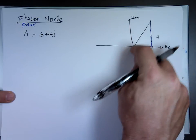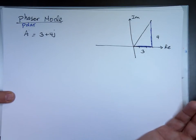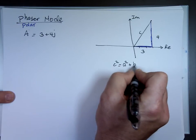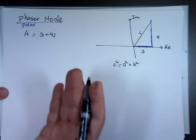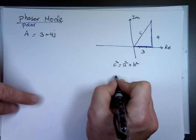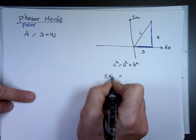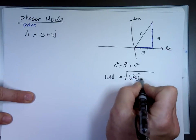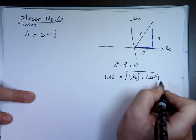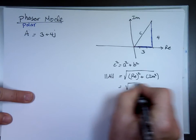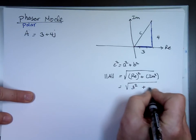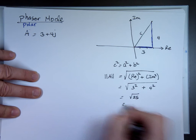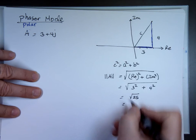Using what we know from trig — the Pythagorean theorem — we'll call this side C. Pythagorean says C squared equals A squared plus B squared. So to change a problem to polar, the magnitude of A is going to be the square root of the real portion squared plus the imaginary portion squared. That's the square root of 3 squared plus 4 squared — just 4, not 4J, we're talking about the value. So that's the square root of 25, which is 5. It's the length of a vector, so it's positive 5.